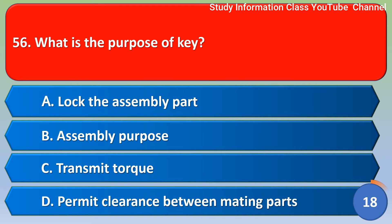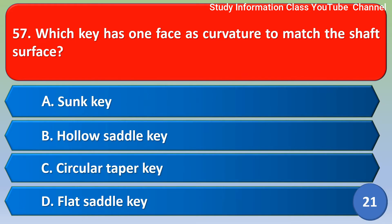Next question: What is the purpose of a key? Option A: to block the assembly part. Option B: for assembly purpose. Option C: to transmit torque. Option D: to permit clearance between mating parts. The correct answer is Option C: to transmit torque.